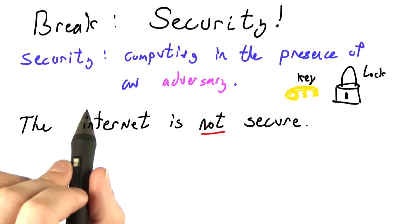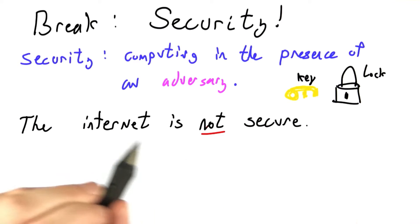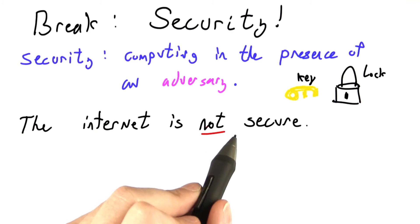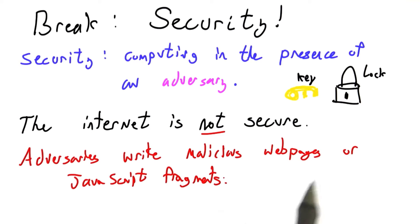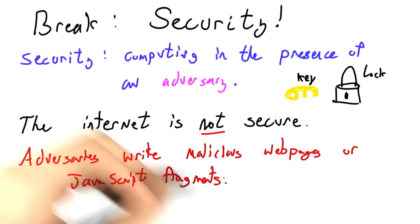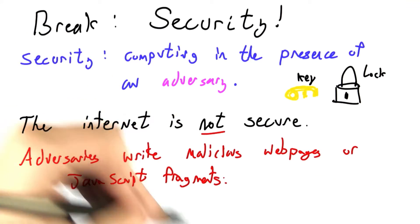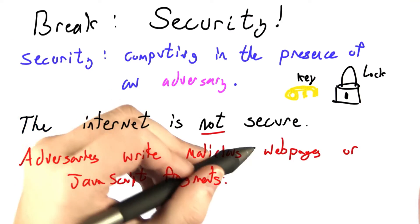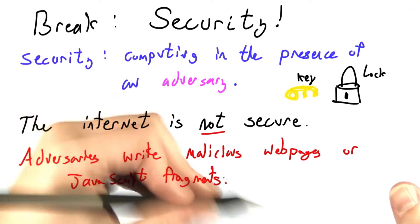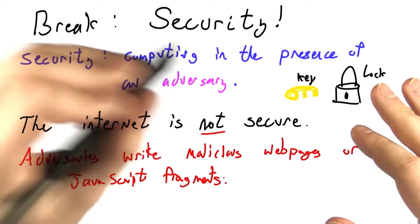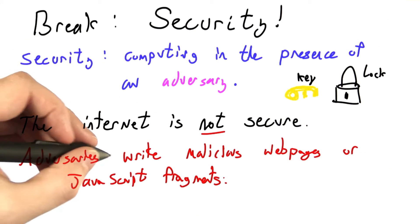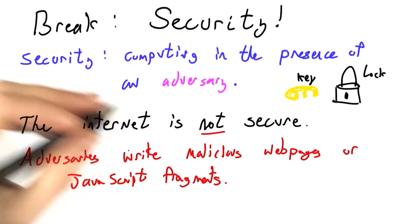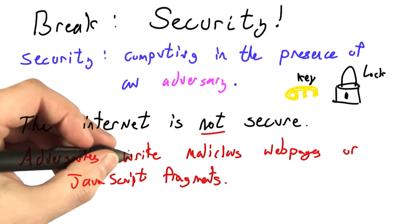It just so happens — I am breaking this news — that the Internet is not secure. Malicious agents or adversaries can write malicious web pages or JavaScript fragments. The simplest way to do this would be to write a JavaScript fragment that loops forever, some sort of version of Fibonacci that has no stopping condition, that just keeps going and going. Then as soon as you directed your browser to that page, it would stall, and you'd be denied some service — you wouldn't be able to use your computer.